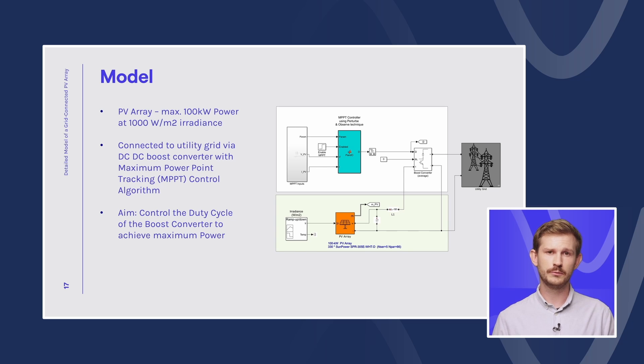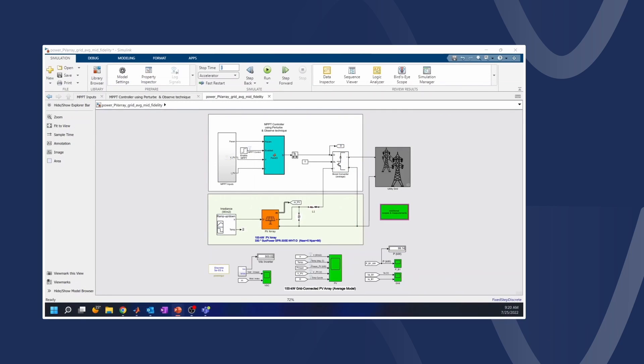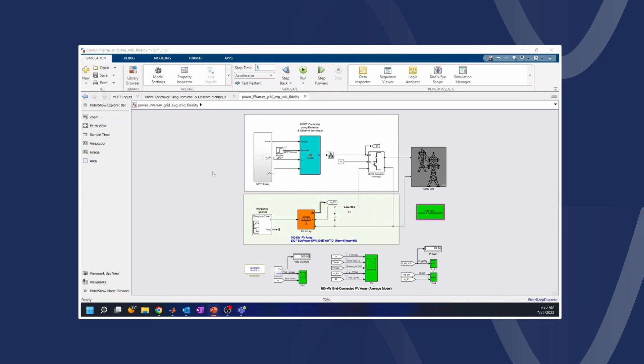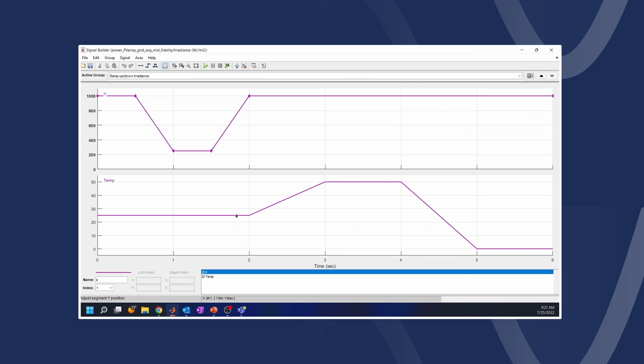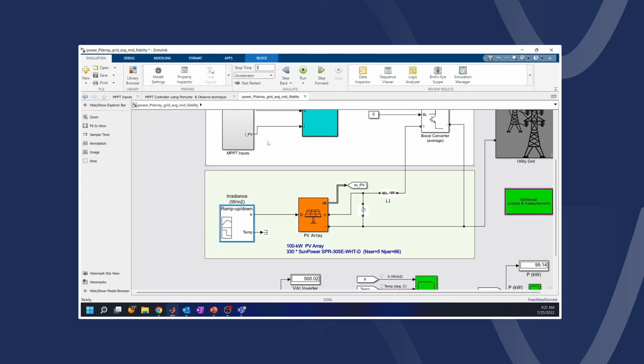Let's explore it in the model itself. In our model, we can see the same architecture that we had on the slide. We have the PV system, the DC-DC boost converter with the implemented control, and the utility grid. For the PV array, we are using the PV array block from the Simscape electrical. And for the input, we are defining the irradiance level for the operation time. You can see the details of the input here.